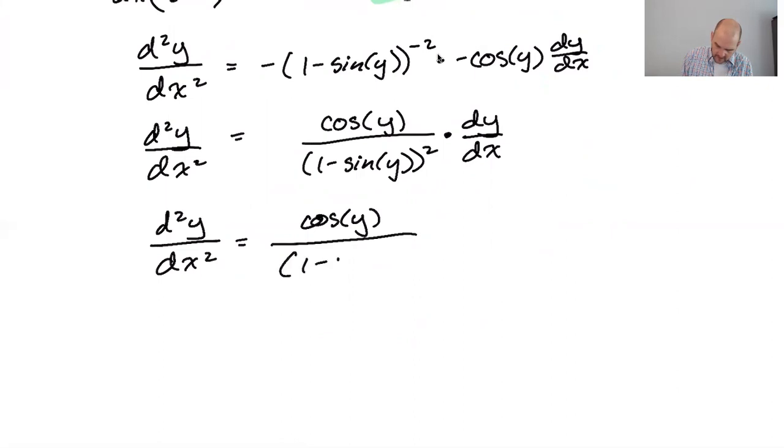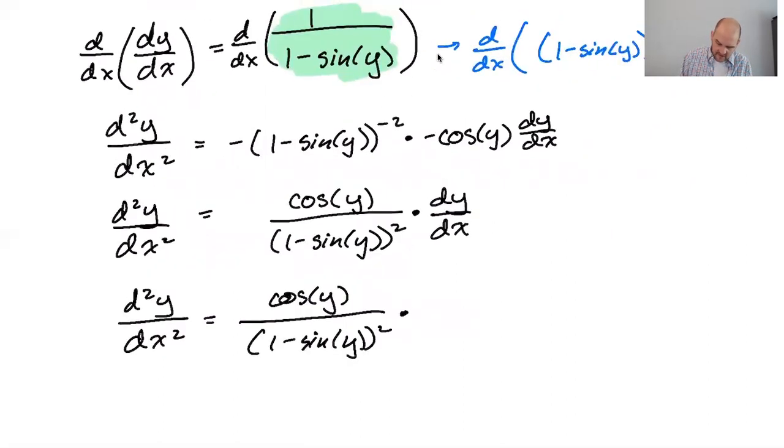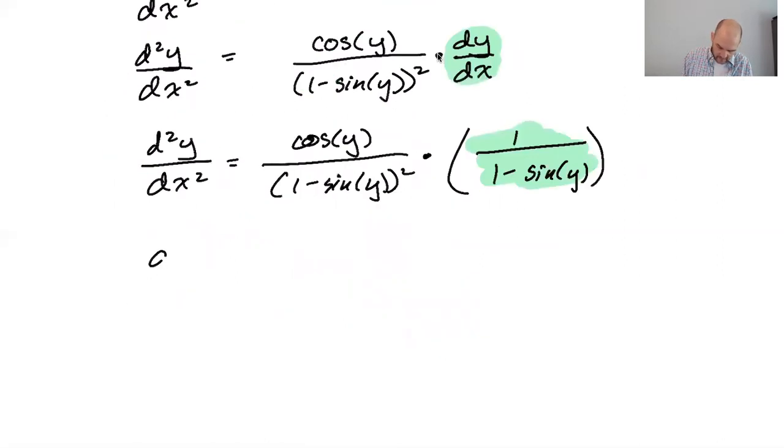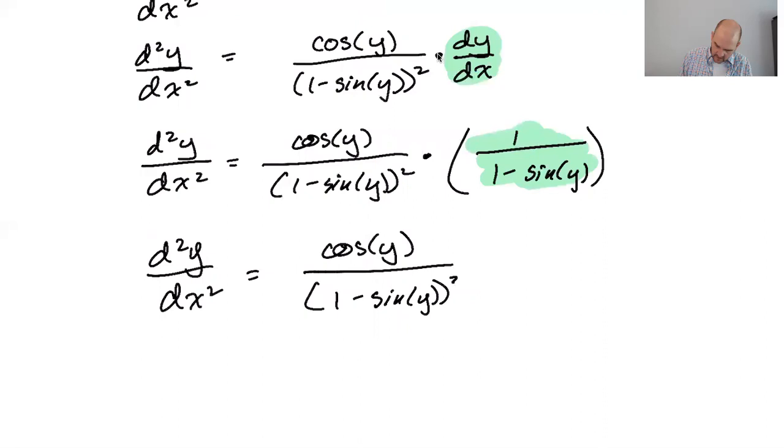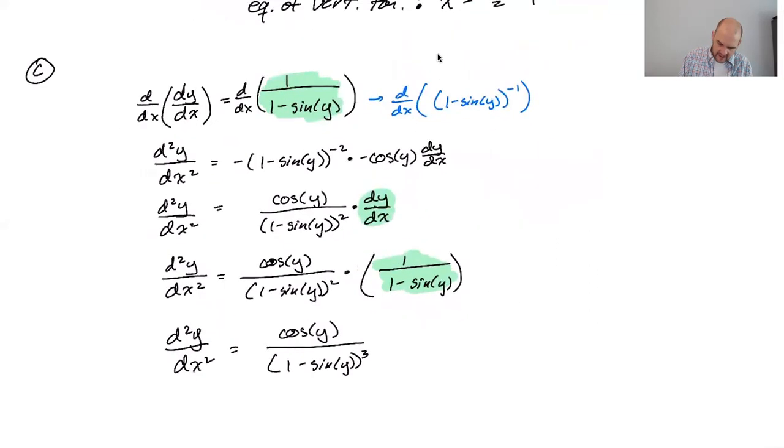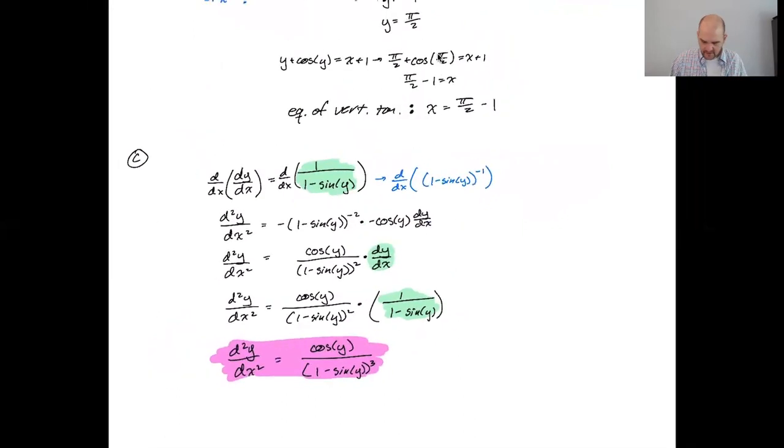Cosine of y over (1 minus sine of y) squared. And then the derivative of, so this is the quantity 1 over (1 minus sine of y). Right? Because we're substituting. Follow the green all the way down. Substituting that. This ends up being the second derivative of y with respect to x is cosine of y over the quantity (1 minus the sine of y) cubed. There you go. I believe that's my final answer. All of the work is necessary, but I'm highlighting it to let you know that I think I'm done.